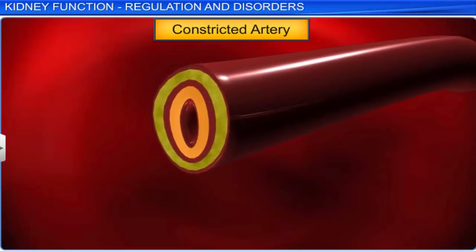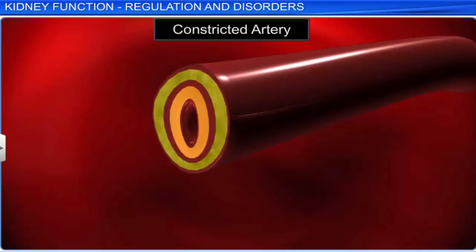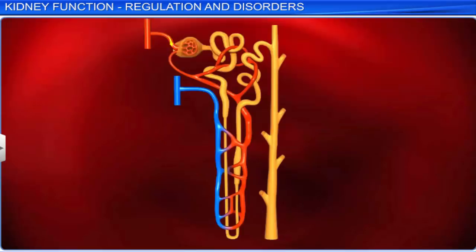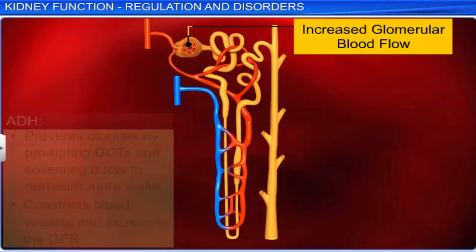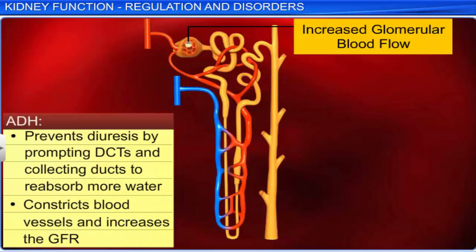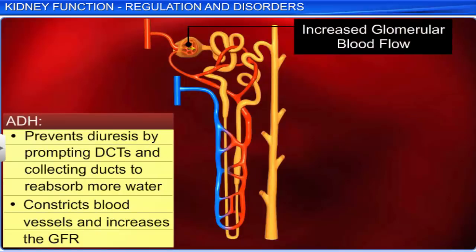ADH also has the ability to constrict the blood vessels. This increases blood pressure, thereby increasing the glomerular blood flow in the kidney and consequently the glomerular filtration rate (GFR).